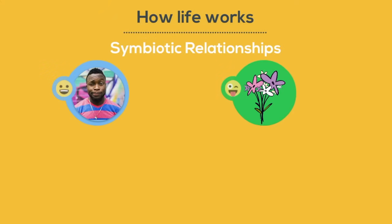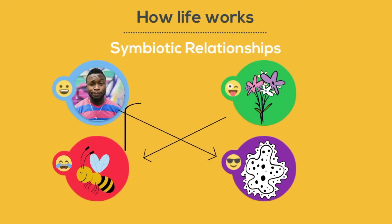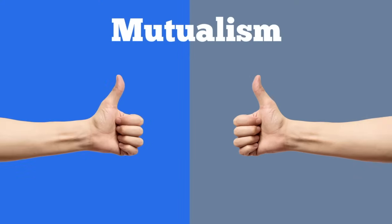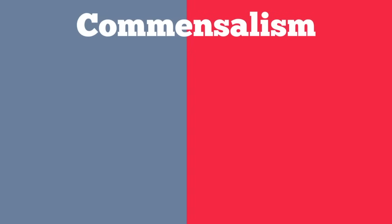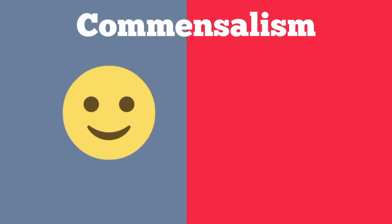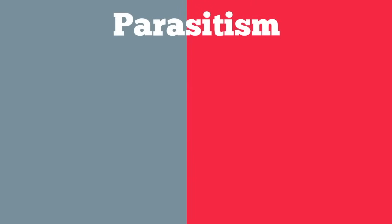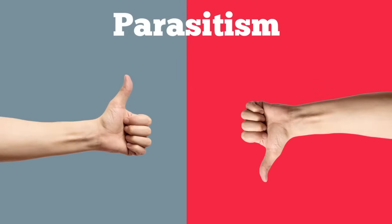Symbiosis describes a close interaction between two or more different species. In this video, I will focus on three types. They are mutualism, in which both organisms benefit; commensalism, in which one organism benefits and the other is neither helped nor harmed; and parasitism, in which one benefits and the other is harmed, or maybe even killed.